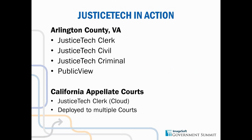Some of the groups using these solutions: we have Arlington County out in Virginia — they're using Justice Tech Clerk, Justice Tech Civil, Justice Tech Criminal, and actually Public View as well. Public View is one of our pieces of the solution to provide access to the public and private attorneys to the entire case file, whether documents come in through True Filing, through a different e-filing system, through OnBase directly, or as paper files brought right to the clerk — all of those documents, the entire case file, can be provided through the Public View solution.